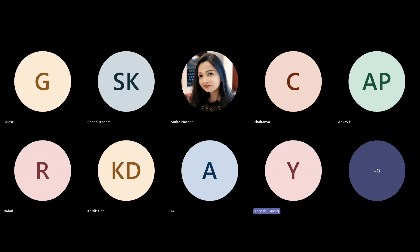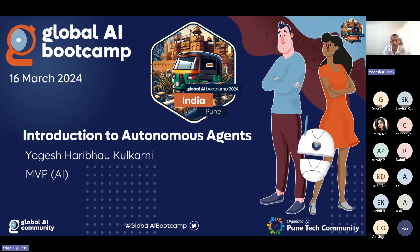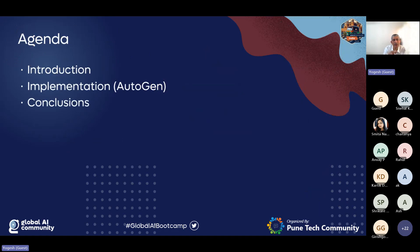Today we're talking specifically about autonomous agents, which are LLM-based — large language model based. Autonomous agents can be very generic: they can be software agents, hardware or robotic agents, but today we are mainly talking about LLM-based agents. I'll give some theoretical background, then an implementation based on the Autogen framework — developed mainly by Microsoft — and finally conclusions and future-related topics.